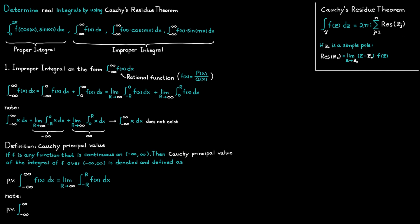By using this new definition, we can once again try to determine the integral from minus infinity to infinity for f(x) = x. We notice that x is an odd function and we are going the same distance to the right and left on the x-axis, which means this integral is equal to zero. The great thing with Cauchy's principal value is that if a normal integral exists, then it is going to be equal to its principal value.